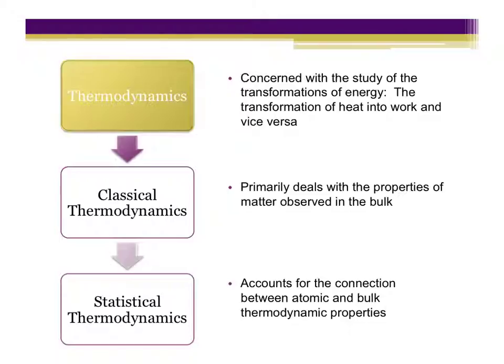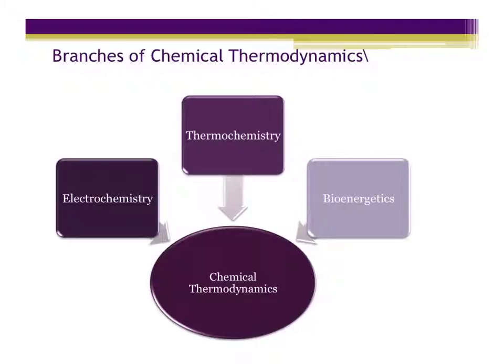Basically, what happens at the level of a molecule, ion, or atom, and how that translates into what we observe on the bulk scale. When we think about classical thermodynamics or chemical thermodynamics, we have three different areas: electrochemistry, thermochemistry, and bioenergetics. Thermochemistry has to do with the transformations of heat — the study of heat transfer during a chemical reaction. Electrochemistry deals with the thermodynamics of the flow of electrons and electrochemical processes. And bioenergetics has to do with energy transfer in a living system.